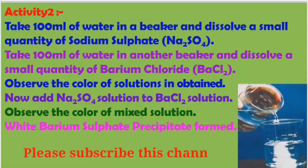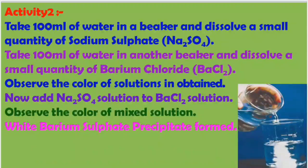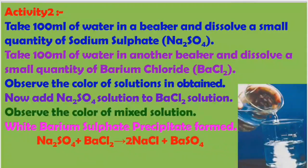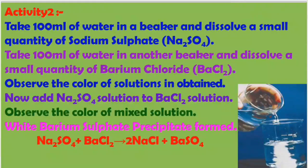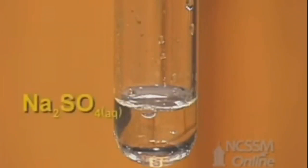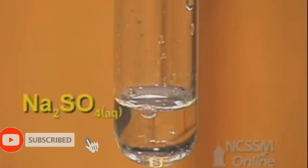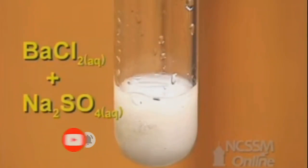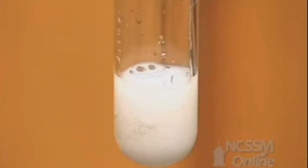A white barium sulfate precipitate is formed. The reaction is: sodium sulfate reacts with barium chloride to form sodium chloride and barium sulfate. Barium sulfate is the precipitate. A precipitate is an insoluble compound in water. When barium chloride is added to sodium sulfate, it forms a white insoluble compound — that is the precipitate.